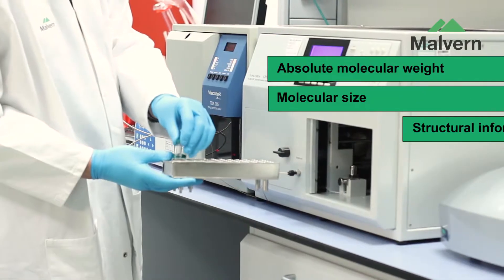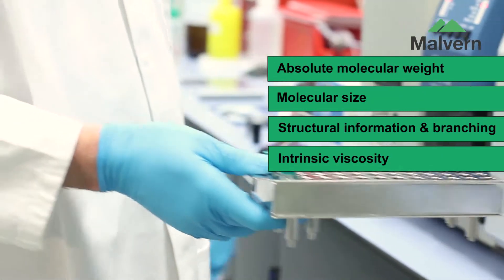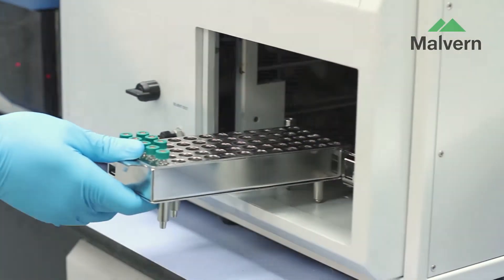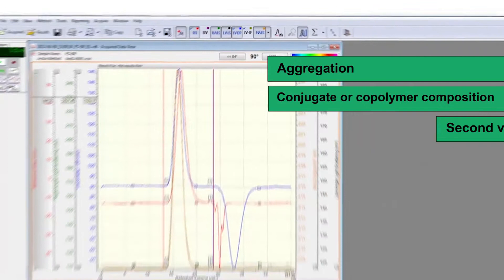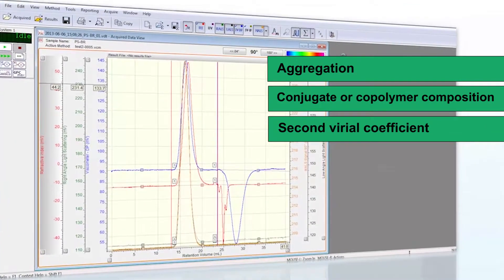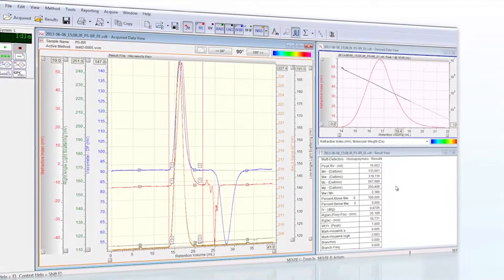Macromolecular research demands a complete understanding of properties including absolute molecular weight and size. Standard GPC SEC systems simply can't keep up, so you require advanced detection for today's advanced applications.